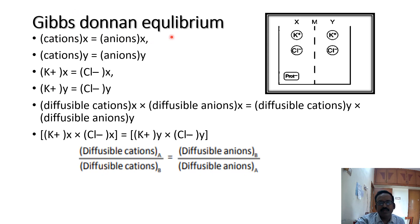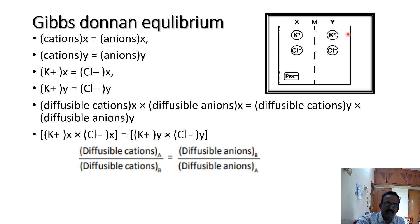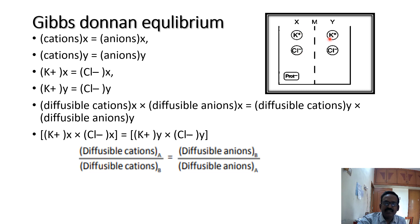Gibbs-Donnan Equilibrium explains the generation of the resting membrane potential. According to the Gibbs-Donnan Equilibrium, if you take a container with a semi-permeable membrane — the X side and Y side — and if you place only potassium chloride on both sides, the cations and anions are equal on each side. So the diffusible cations and diffusible anions on one side equal the diffusible cations and diffusible anions on the other side, and both are equal.